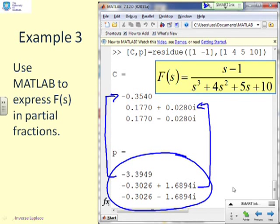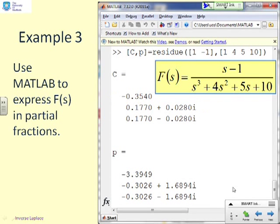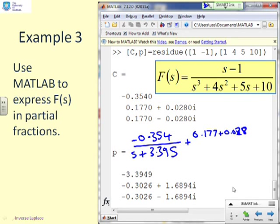So that one goes with that one. That one goes with that one. If I just change the colour, that one goes with that one. And so perhaps, although I might not want to do it, just to demonstrate the point very clearly, I'll write out what the partial fraction will be. You're going to get minus 0.354, that's residue 1, over s plus 3.395. That's pole 1. Then you're going to get plus 0.177 plus 0.028i over s plus 0.303 minus 1.69i.